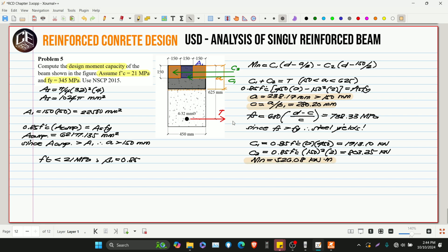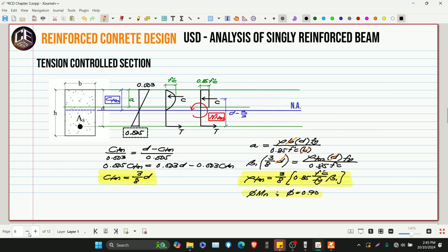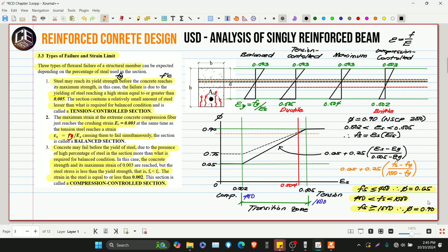And what's being asked here is design moment. So, that means that is phi MN. The question is, what is our reduction factor? So, let's check. Our FS is greater than 400 megapascal but less than 1,000 megapascal. What does that mean? We're in the transition zone. Our FS is greater than 400 but less than 1,000. So, we're in the transition zone.